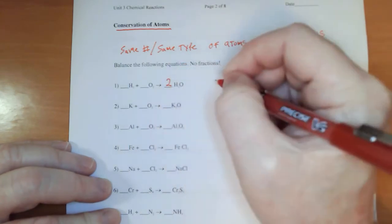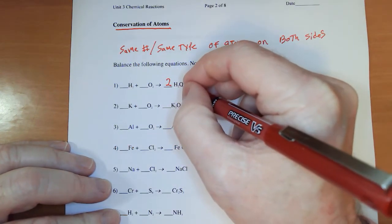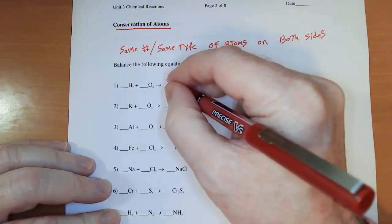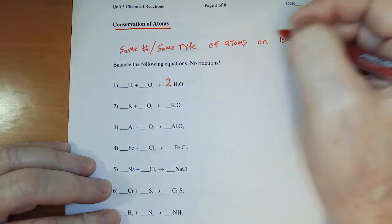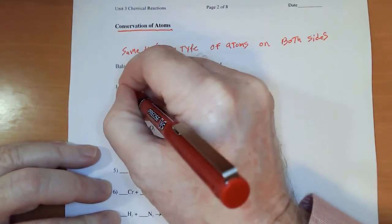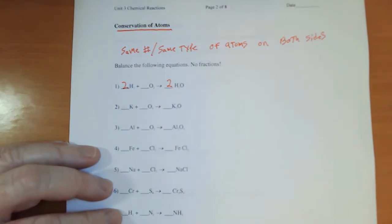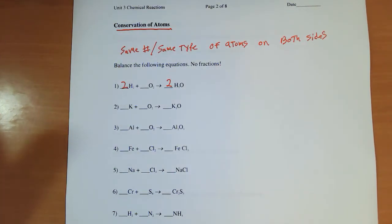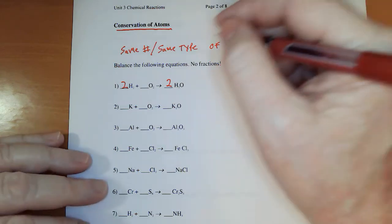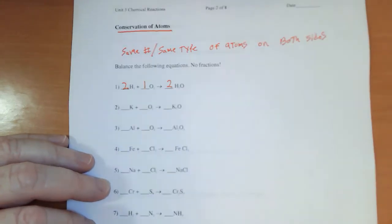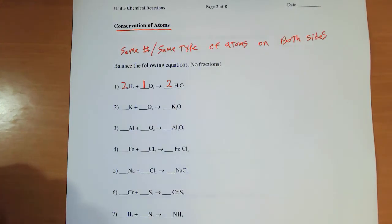So by putting that two there as a coefficient, I now have two oxygens but I've got two times two which is four hydrogens. Now over here I can put a two to balance that out. It's now a balanced equation. Now for those of you who are a little OCD like myself and you see this blank line, you're welcome to put a one right there but that one is not required.